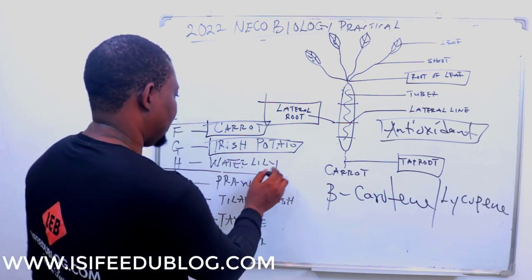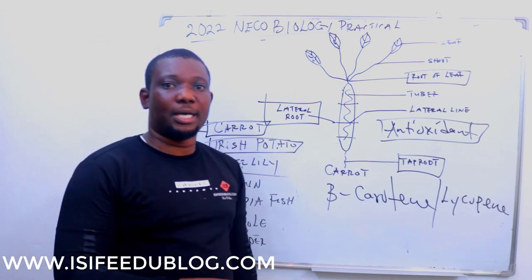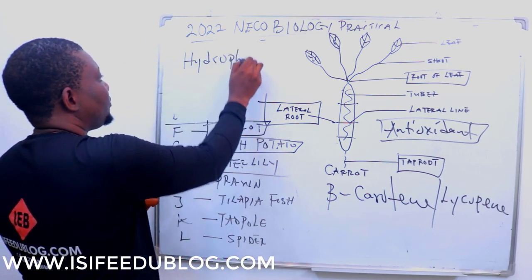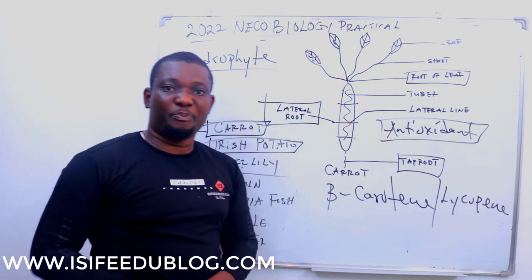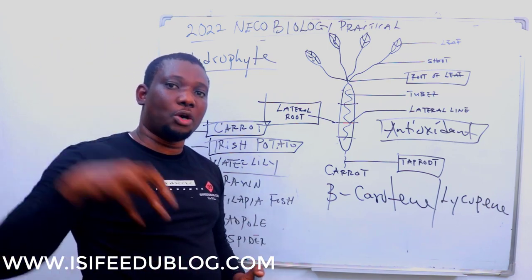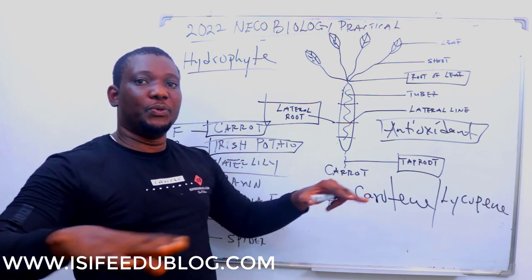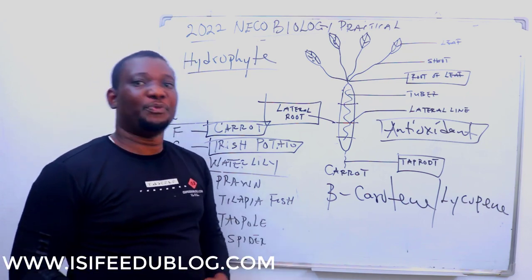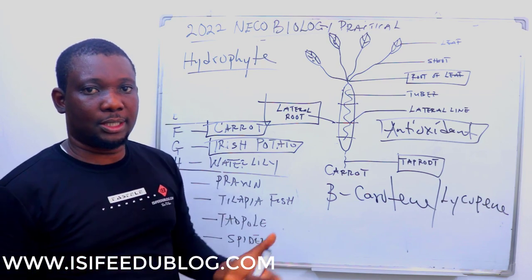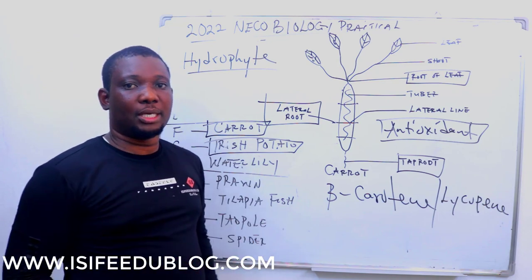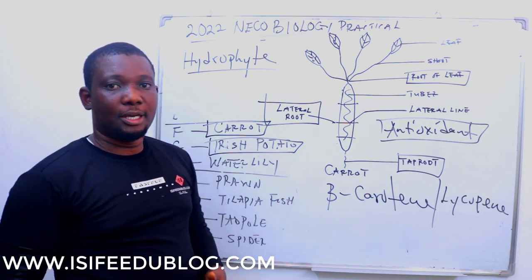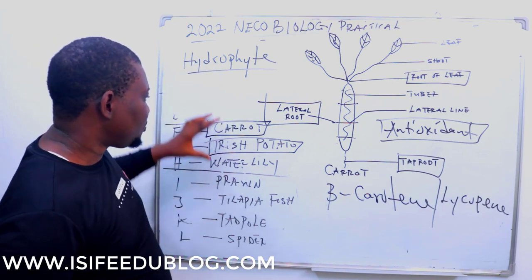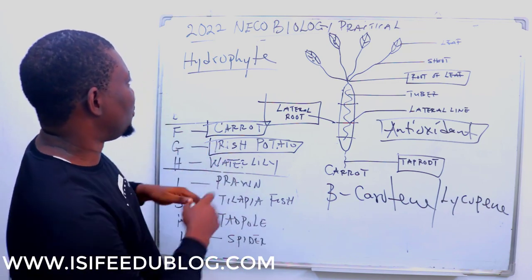Specimen H, water lily, is a hydrophyte. Take note of three aspects of plants in terms of habitat: xerophytes, hydrophytes, and mesophytes. Water lily is a hydrophyte — it is a water plant. Water lily is a type of plant that floats on water. You will not see its rhizome; it is submerged in water and the leaf floats. For this plant to survive in water, the roots must be poorly developed. They are aquatic plants — hydrophytes.